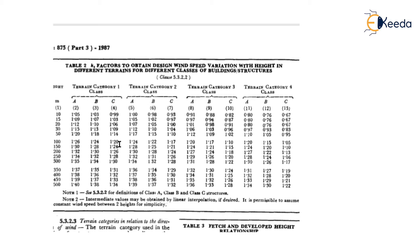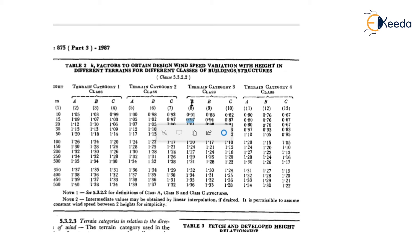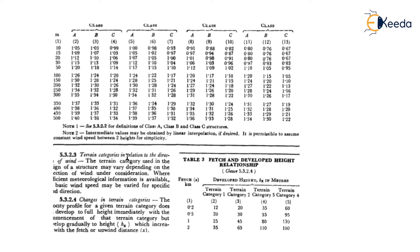For example, if your building is in Terrain Category 3, surrounded by buildings up to 10 meters height, and your structure height is 15 meters — it falls in Class A. From Table 2 for 15-meter height, Terrain Category 3, Class A, K2 equals 0.97.